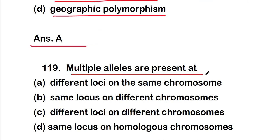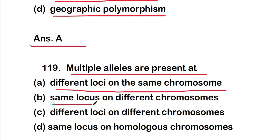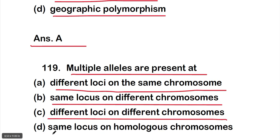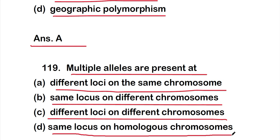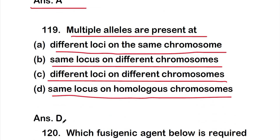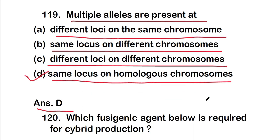Question 119: multiple alleles are present at Option A different loci on the same chromosome, Option B the same locus on different chromosomes, Option C different loci on different chromosomes, or Option D the same locus on homologous chromosomes. The right answer is Option D — multiple alleles are present at the same locus on homologous chromosomes.